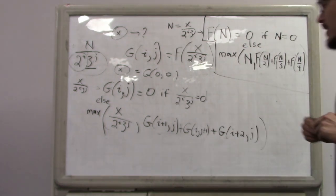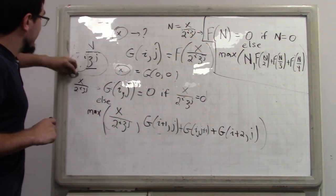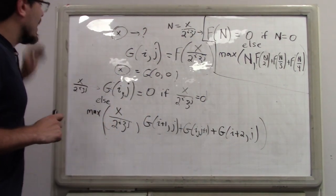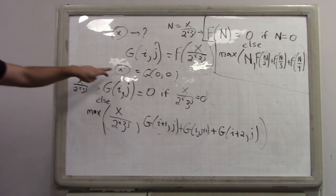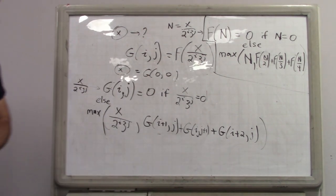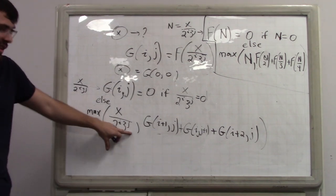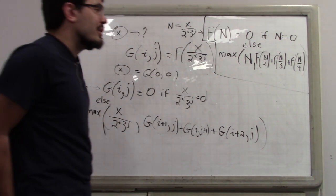Once you have this precomputed table, the division can be done in order 1. That returns each expression to being order 1. Now there are only log²(n) cases, and the total time complexity is order log²(n). We are now back to the same time complexity we would have gotten with top-down.